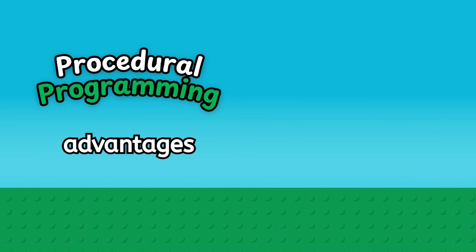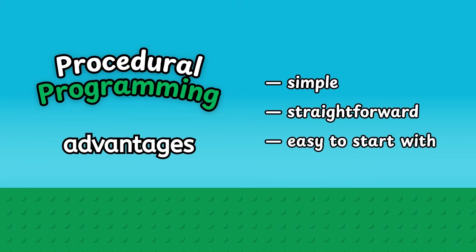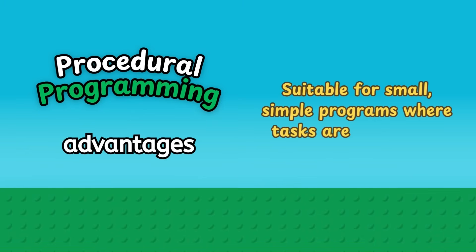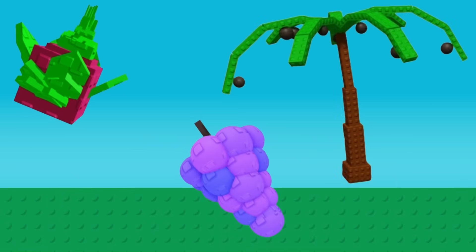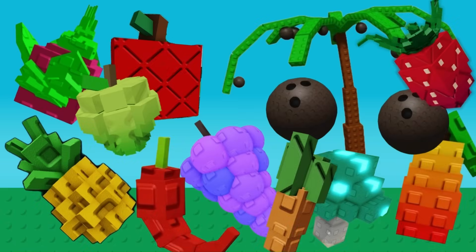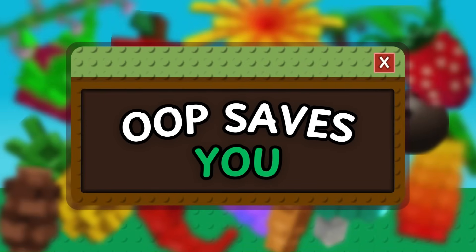Now, to be fair, procedural programming does have its advantages. It's simple, straightforward, and easy to start with. If you're only planting one or two seeds, the notebook method works just fine. It's suitable for small, simple programs where tasks are sequential. But as your garden or your program gets bigger and more complex, OOP saves you from repeating yourself endlessly and makes everything easier to maintain.